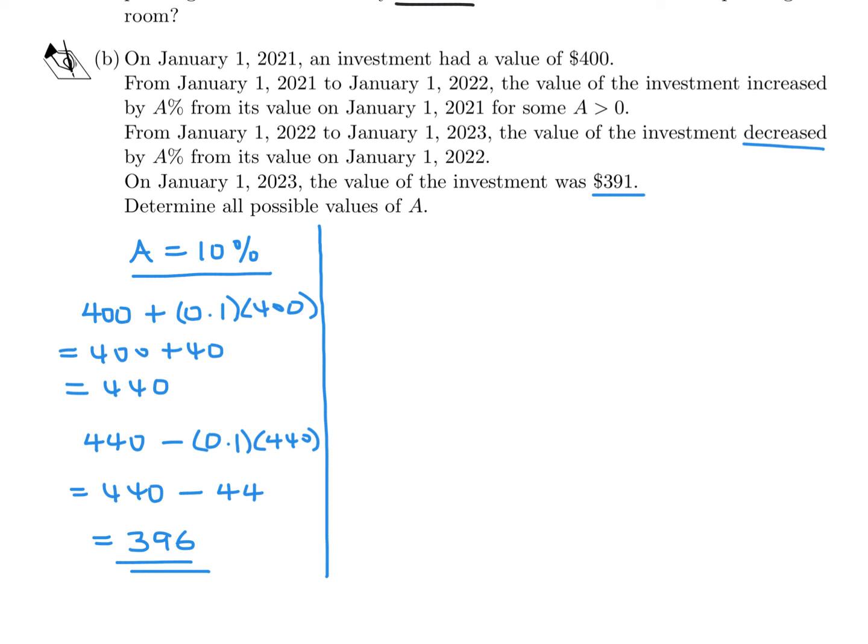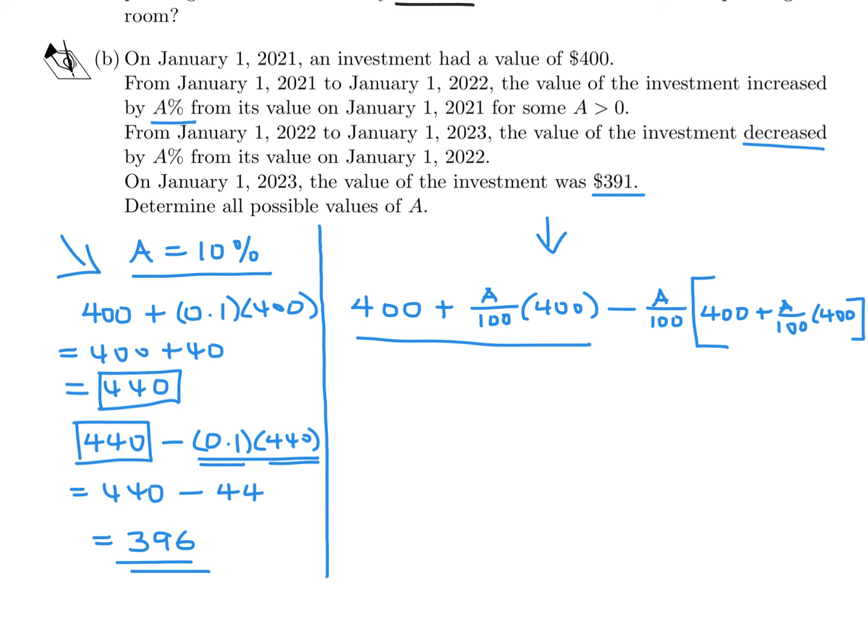We are not given any value for A, so I've got to do this for just A, and we've got to get to 391. I'm going to follow the exact thing I did. We started with 400, and we have to take A/100 because we have to convert it to a number. We multiply by 400. Then we have to subtract from this whole thing this guy, which would be A/100, and then this 440. But this 440 is this whole thing, so I've got to put that whole thing over here: 400 + A/100 times 400. And this whole thing, we want it to equal 391.